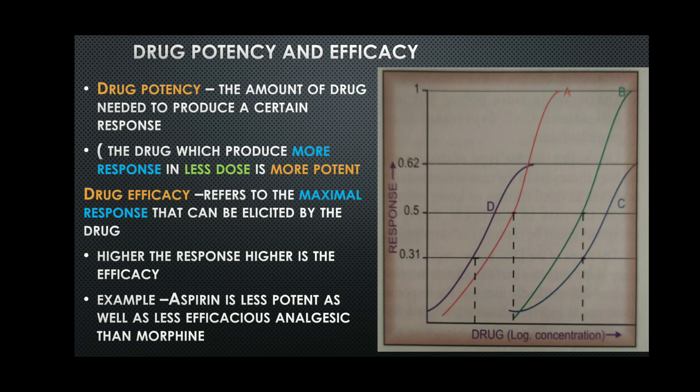For example, aspirin is less potent as well as less efficacious as an analgesic than morphine. Morphine is a highly effective analgesic. Aspirin is less potent — it is required in a greater amount — and it is less efficacious because it does not produce as high a response as morphine.